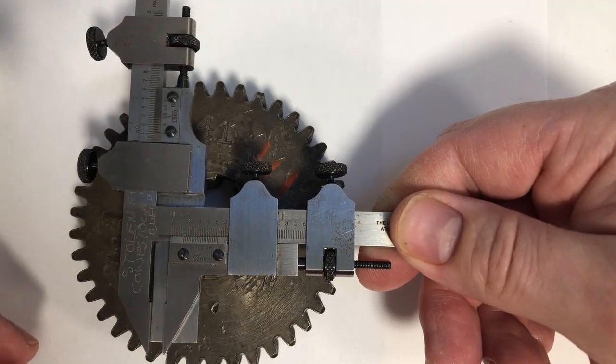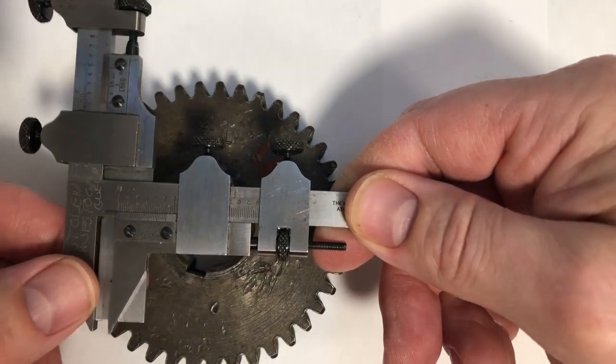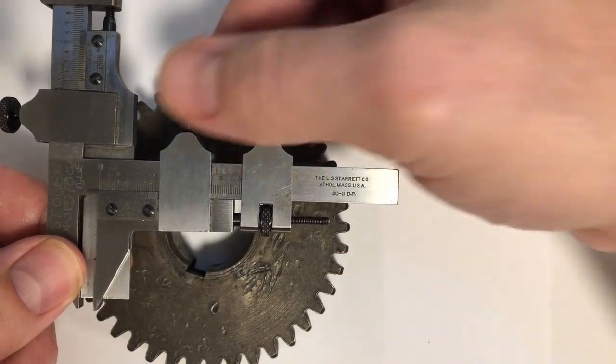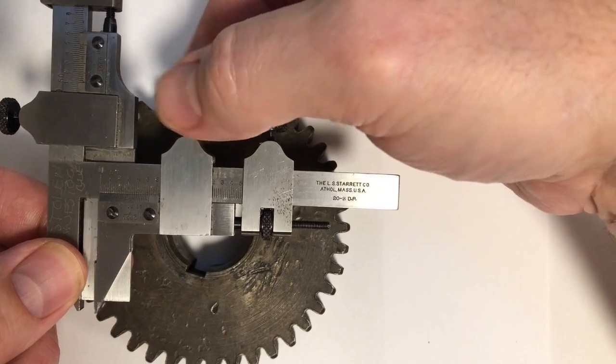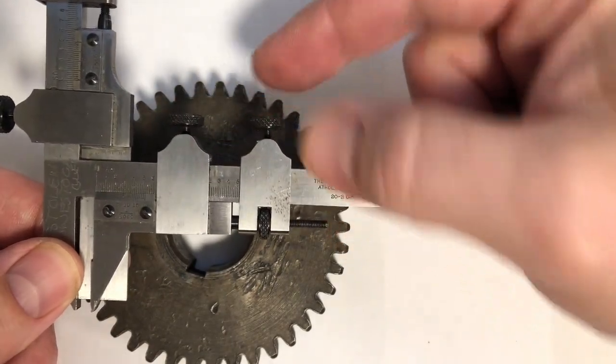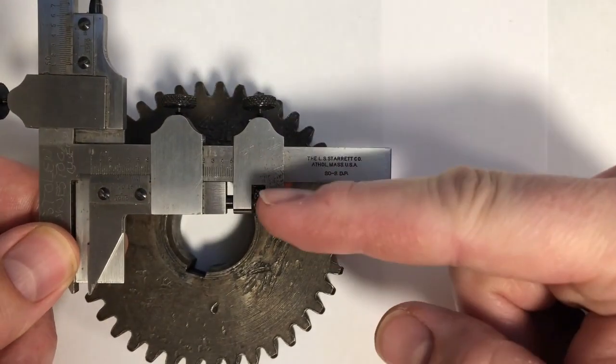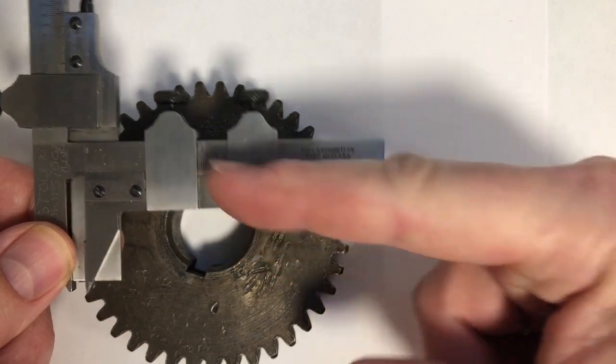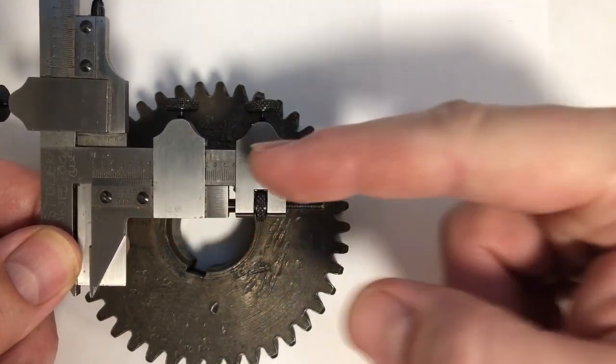Okay now I want to measure the gear tooth thickness. So what I'm going to do is I'm going to loosen this one off. Then I'm going to tighten this one down. And then I'm going to use this thumb screw here to adjust the jaw in and out.